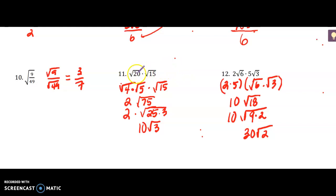Number 11: you can either multiply the entire thing together first and do 20 times 15, but I like to simplify first if I can. I broke the square root of 20 into the square root of 4 times the square root of 5, which gives me 2 times the square root of 5. Then I multiplied the square root of 5 times 15 to get 75. That has a perfect square factor of 25, so the square root of 25 is 5, times 2 is 10, and then you have the square root of 3 remaining — so 10 square roots of 3.